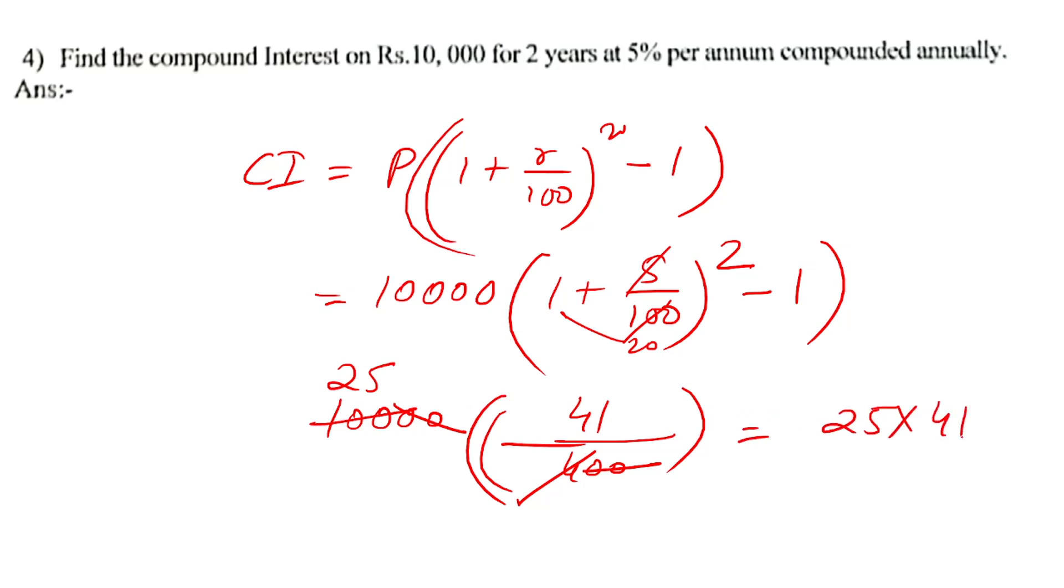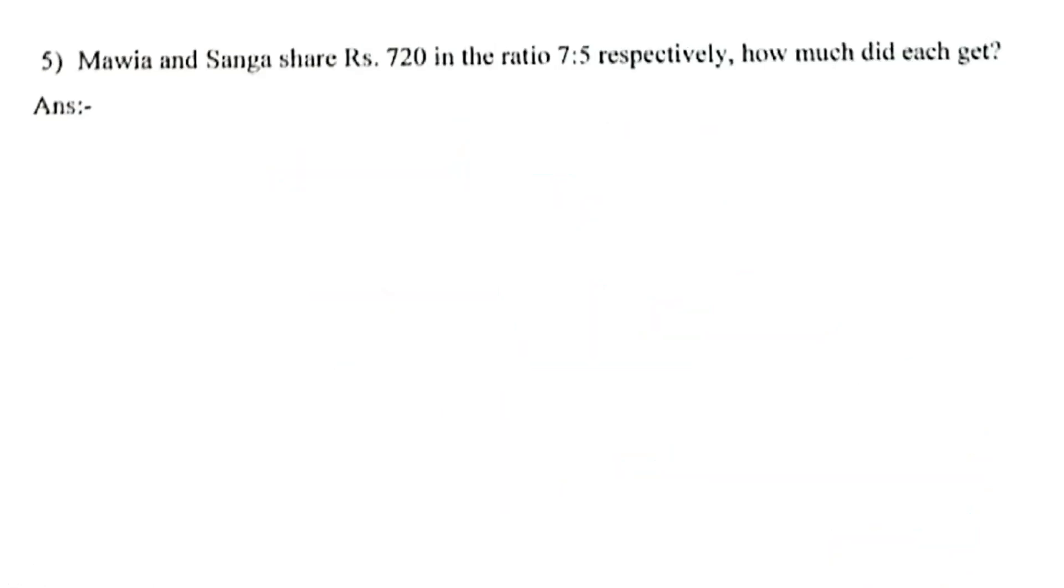400 cancels with 10,000, leaving 25. Compound interest becomes 25 times 41, which equals 1025. This is the compound interest.